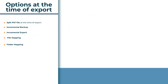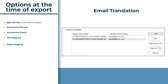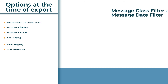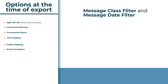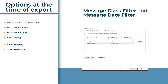The software also provides an email translation option to change improper display email addresses, an item filter option where you can select message class filters, and message date filters.